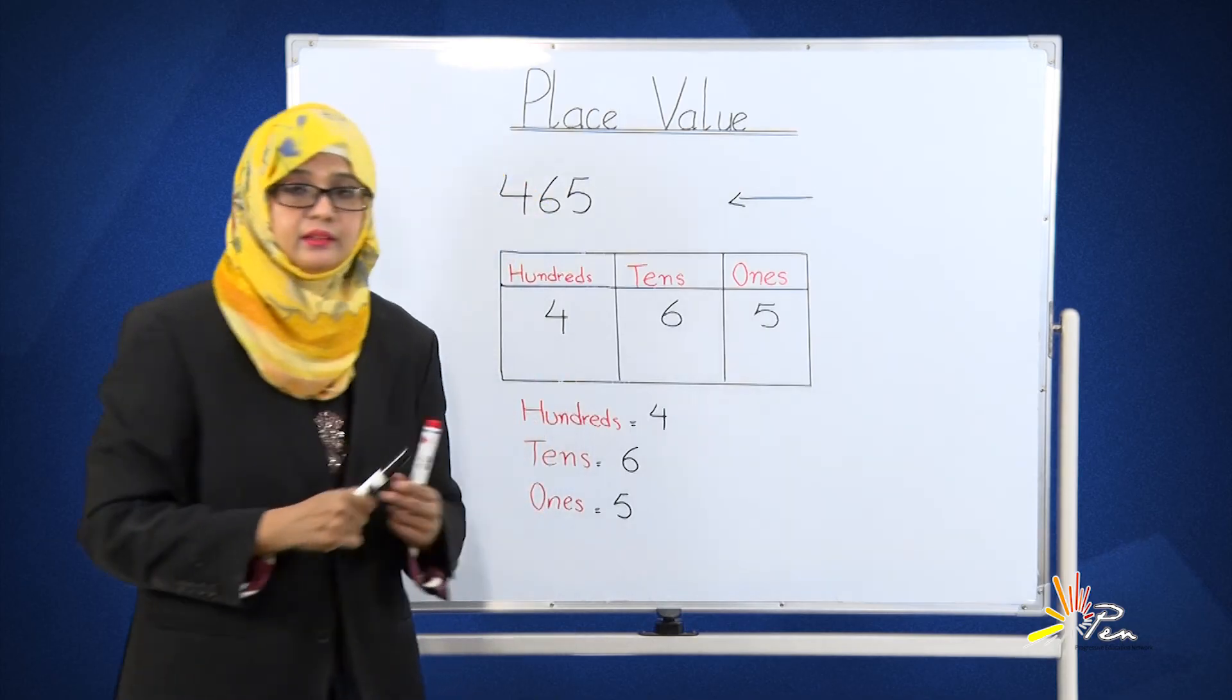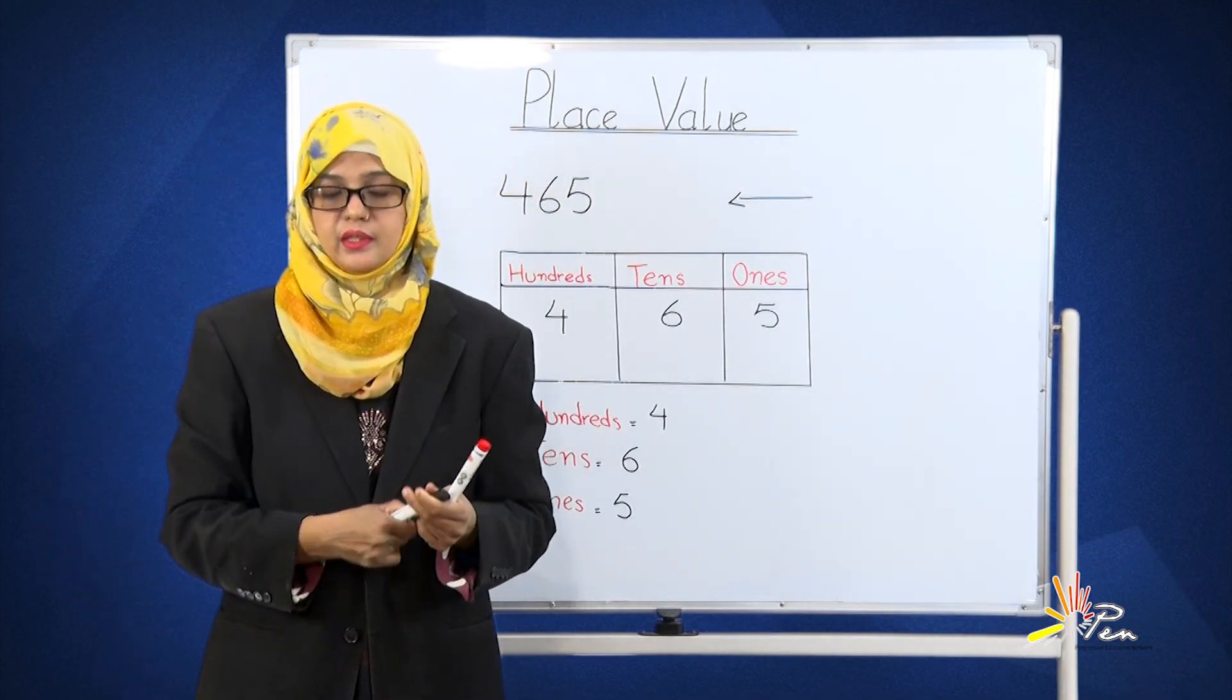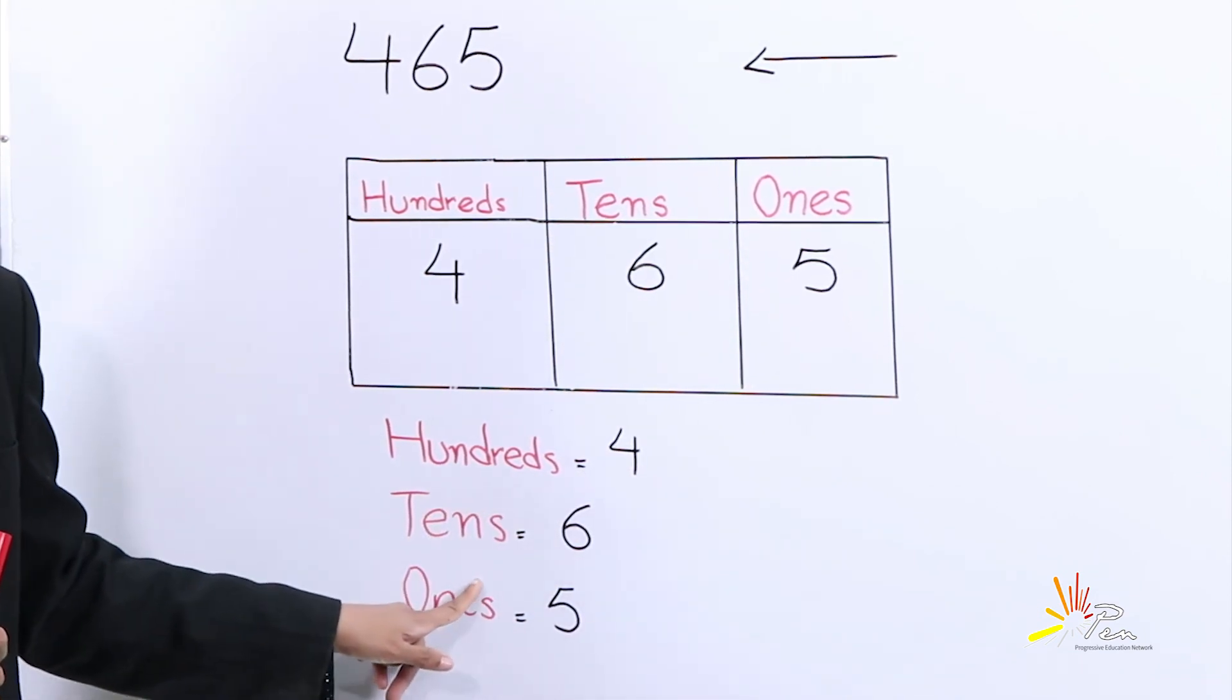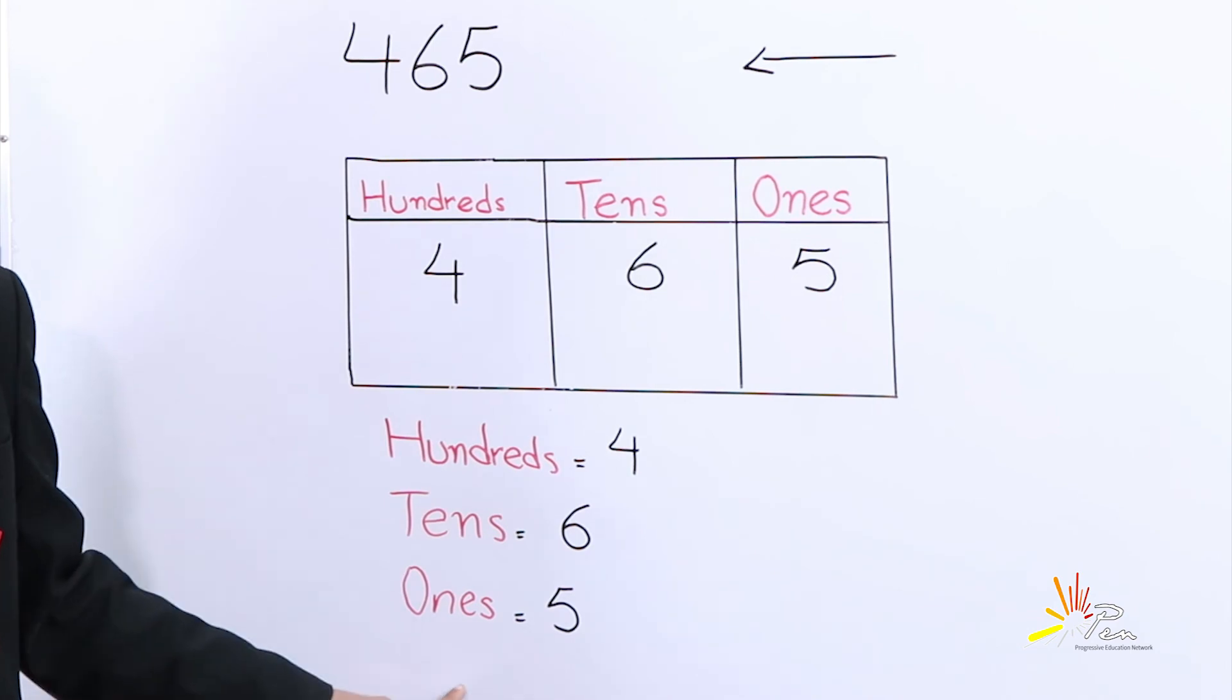So students, it's too much easy. We have four at the hundreds place. Six is at the tens place, and five is at the ones place.